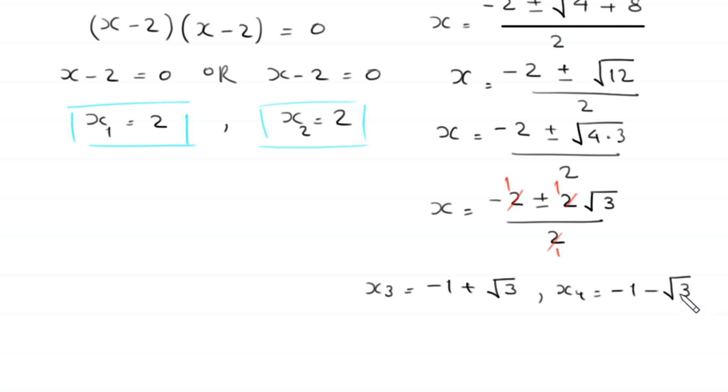So these are the four solutions of this equation: x₁ equals 2, x₂ equals 2, x₃ equals negative 1 plus square root of 3, and x₄ equals negative 1 minus square root of 3.